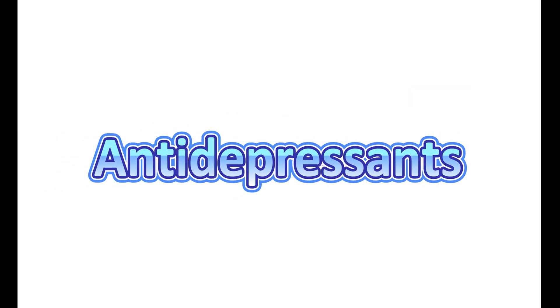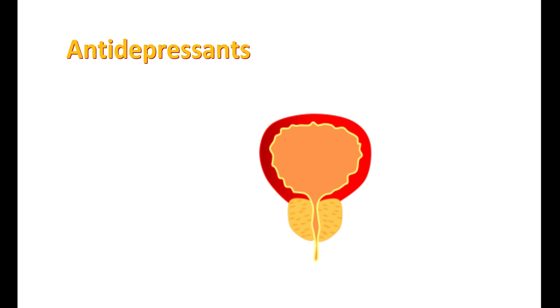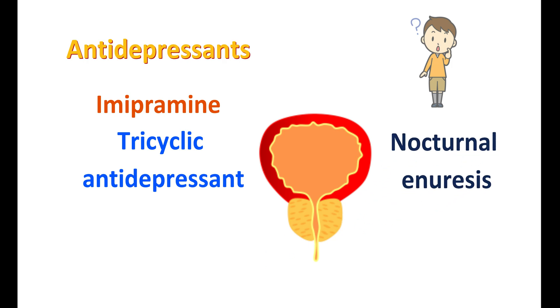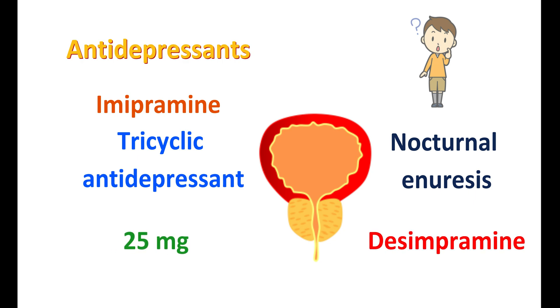The third group of drugs are the antidepressants. Surprisingly, a few antidepressants can also be used to control bladder overactivity. Imipramine is an old-generation tricyclic antidepressant (TCA) widely used for overactive bladder. It is also used to control nocturnal enuresis, or bed-wetting, in children at a low dose of 25 mg. Desipramine is another TCA used for overactive bladder; it is the dextro isomer of imipramine.